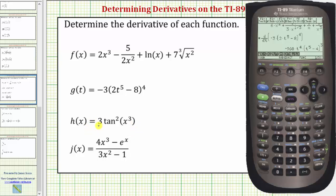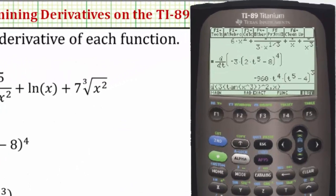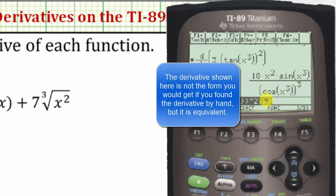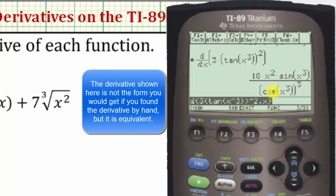Next we have H of X equals three times tangent squared of X cubed. We need to be careful when entering trig functions to powers — we cannot enter them in this form. So let's access the derivative function: F3 then number one. We enter three, then because tangent is squared, an open parenthesis, then tangent (which is second T), and we have tangent of X cubed — X raised to the power of three — close parenthesis, another close parenthesis. The tangent function is squared, so we enter raised to the power of two. Comma, variable X, close parenthesis, and Enter. Here's our derivative H prime of X. Remember, trig functions can also be expressed in different forms using trig identities.